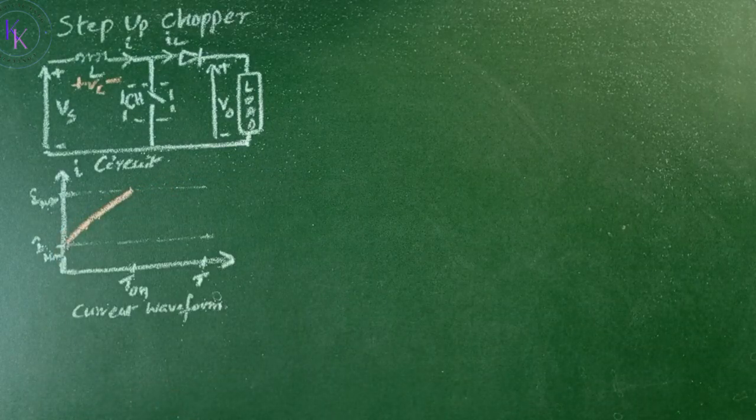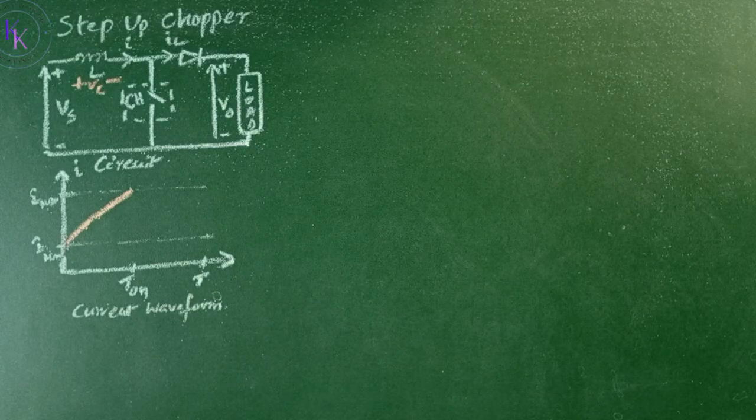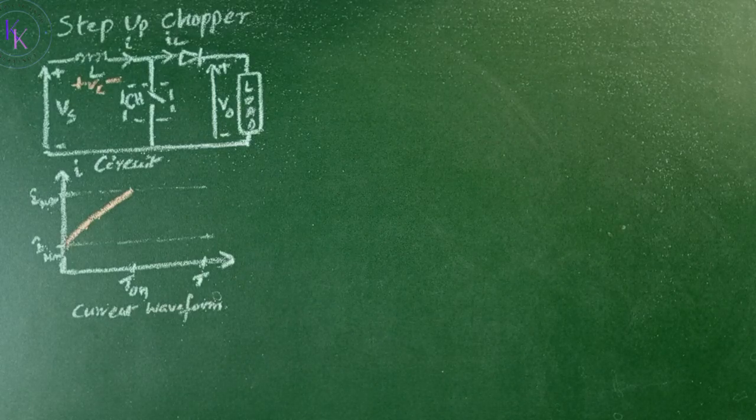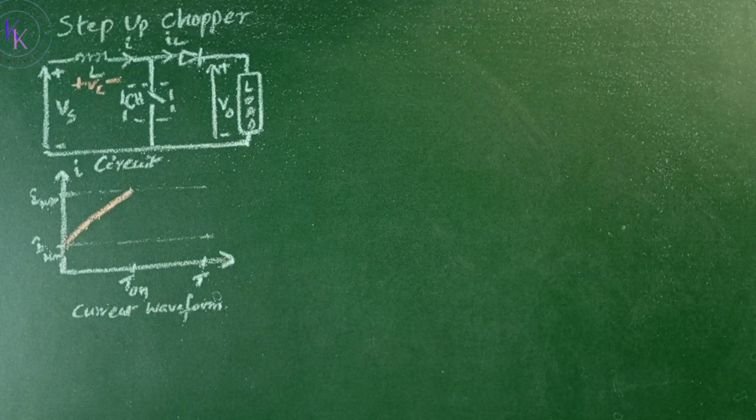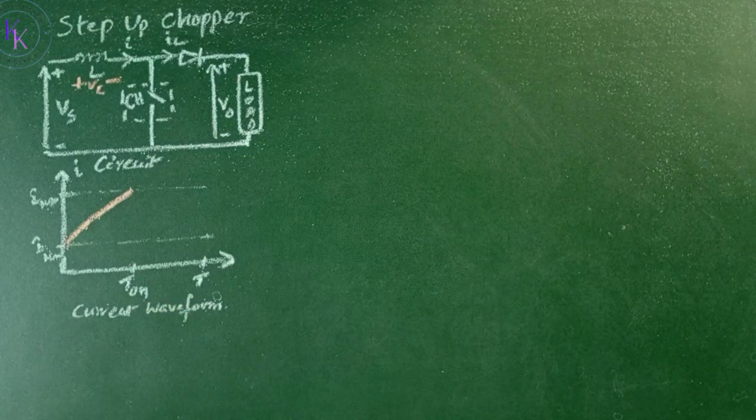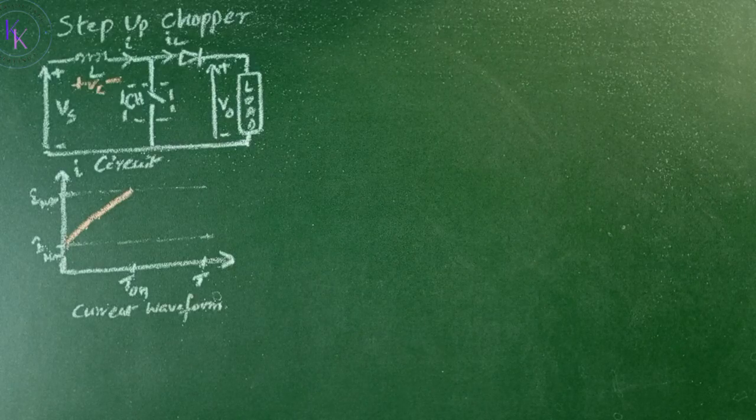During turn-off period, when the chopper is opened, the load voltage equals the input source Vs, but the inductor voltage VL equals zero and discharges the stored energy. This voltage adds up with the source voltage, which is going to be more than the source voltage. Thereby, the current gradually falls from Imax to Iminimum.